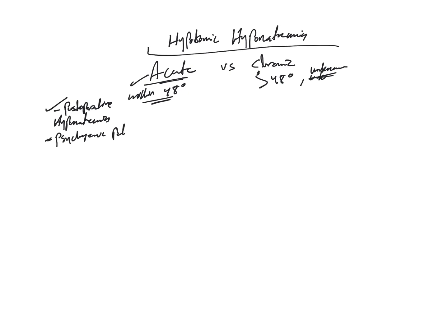Psychogenic polydipsia should make you suspect acute hyponatremia, because these patients suddenly start drinking a massive amount of water and their sodium will be lower than a few hours prior, as large amounts of water are still being absorbed. Ecstasy use can cause ADH release and also cause patients to drink large amounts of water — consider acute. Marathon runners or those doing vigorous exercise who drink large amounts of water also suggest acute hyponatremia.